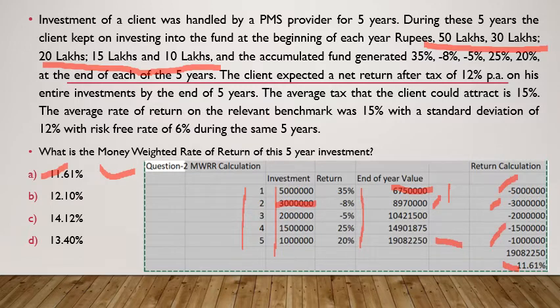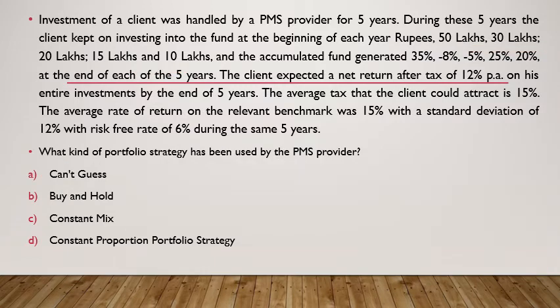The third question asks what kind of portfolio strategy has been used by the PMS provider. However, if you read the case, there is no mention of any portfolio strategy — it is simply a 5-year investment with the client making contributions. So the answer is 'can't guess.' Buy-and-hold strategy requires holding till maturity, which is not mentioned. Constant mix and constant protection portfolio strategies are also not mentioned here.